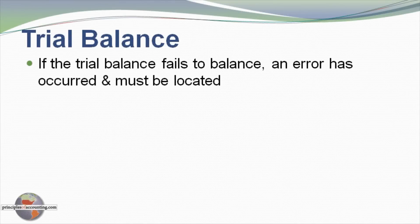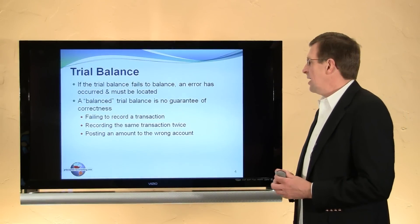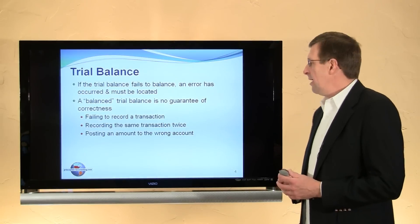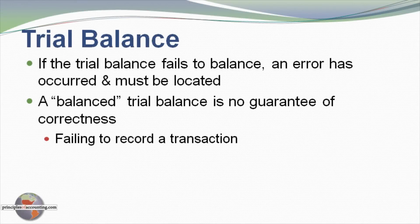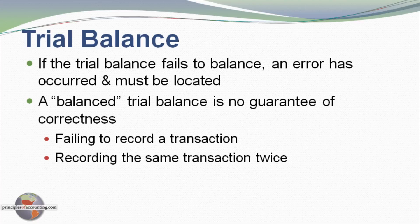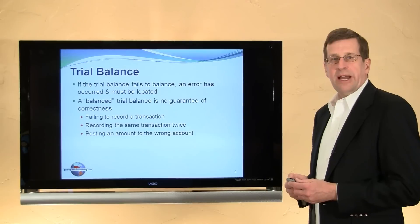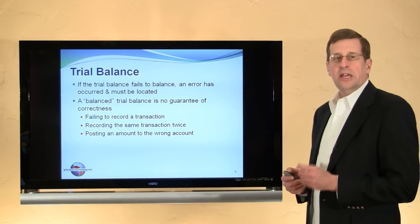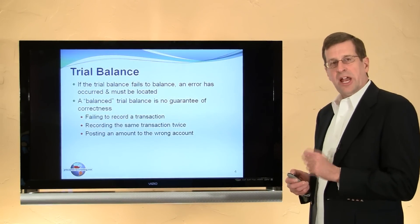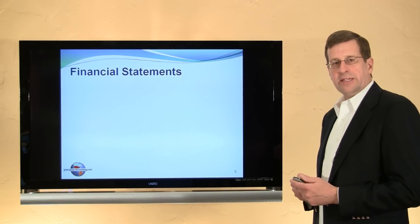The trial balance is a very useful tool to determine if errors have occurred. If the trial balance is out of balance, then certainly something has gone wrong and it's necessary to go back and look at the recording of individual transactions and how they were posted to the ledger accounts. Even if a trial balance is in balance, there's still the possibility of errors — for example, if a transaction failed to be recorded, was recorded twice, or was posted to the wrong ledger account, debits might still equal credits yet errors would exist. So while it's a good self-check, it's not an absolute assurance that there are no errors in the accounting system.